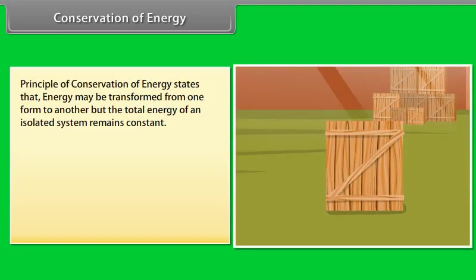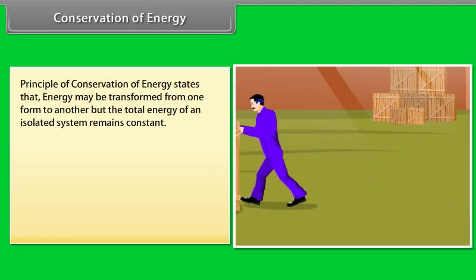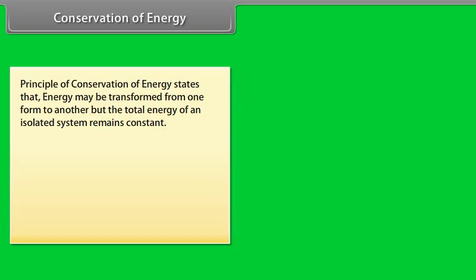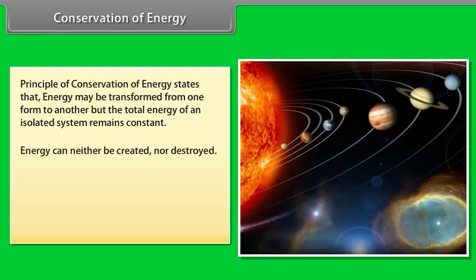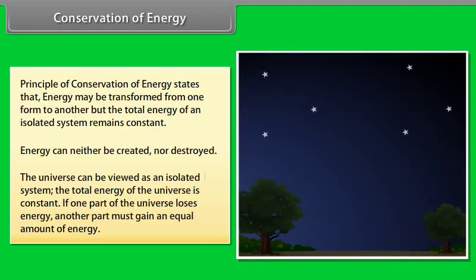Conservation of energy. Principle of conservation of energy states that energy may be transformed from one form to another, but the total energy of an isolated system remains constant. Energy can neither be created nor be destroyed. The universe can be viewed as an isolated system. The total energy of the universe is constant. If one part of the universe loses energy, another part must gain an equal amount of energy.